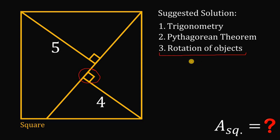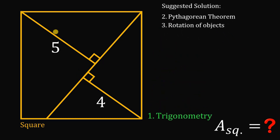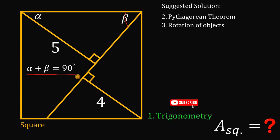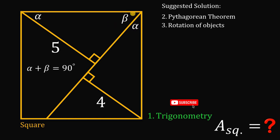In the rotation solution, you can solve this problem without computation. Let's start with our first strategy, which is using trigonometry. Let's call this angle right here alpha, and this angle right here beta. Take note that alpha plus beta must equal 90 degrees because they are the acute angles of a right triangle. Since alpha plus beta equals 90 degrees and this corner is 90 degrees, if this is beta, the other angle must be equal to alpha.